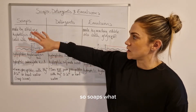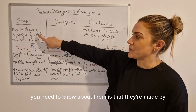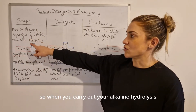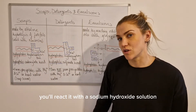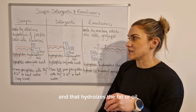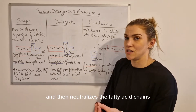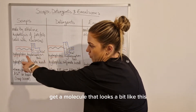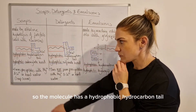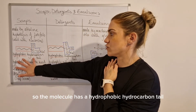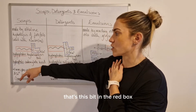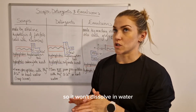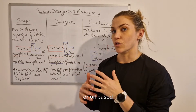Soaps - what you need to know about them is that they're made by alkaline hydrolysis of a fat or an oil. When you carry out alkaline hydrolysis you react it with a sodium hydroxide solution, and that hydrolyzes the fat or oil and then neutralizes the fatty acid chains that are made. The molecule has a hydrophobic hydrocarbon tail - that's the bit in the red box - and hydrophobic means it doesn't like water, so it won't dissolve in water, it will dissolve in anything that's non-polar or oil-based.